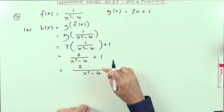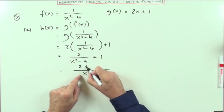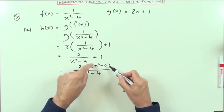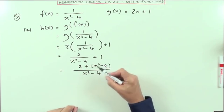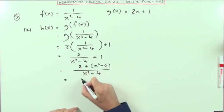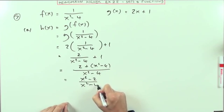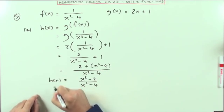And to make 1 equal to something over x squared minus 4, it would have to be x squared minus 4, because x squared minus 4 over x squared minus 4 is just 1. So I've actually got x squared minus 2 over x squared minus 4 for h of x.